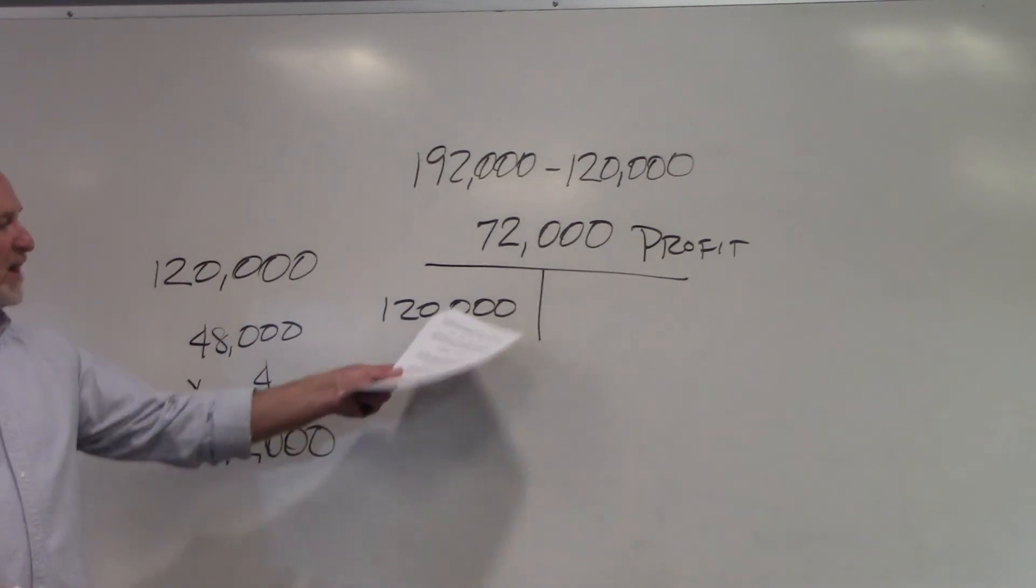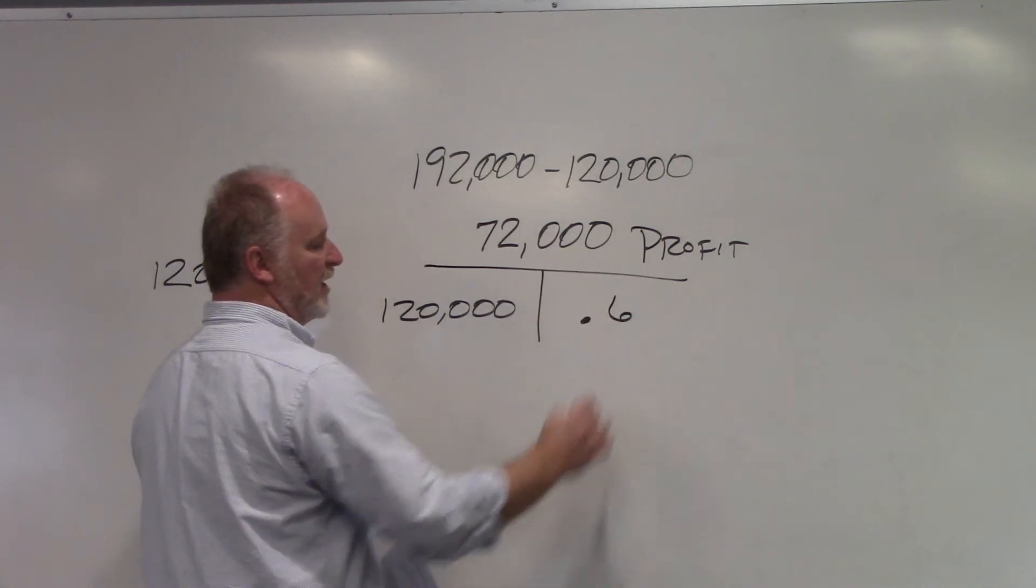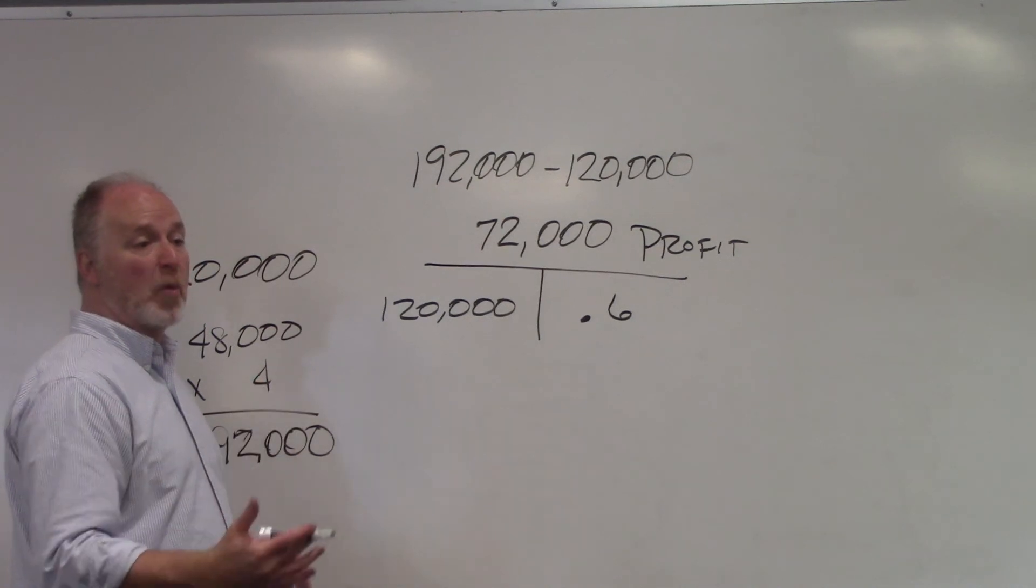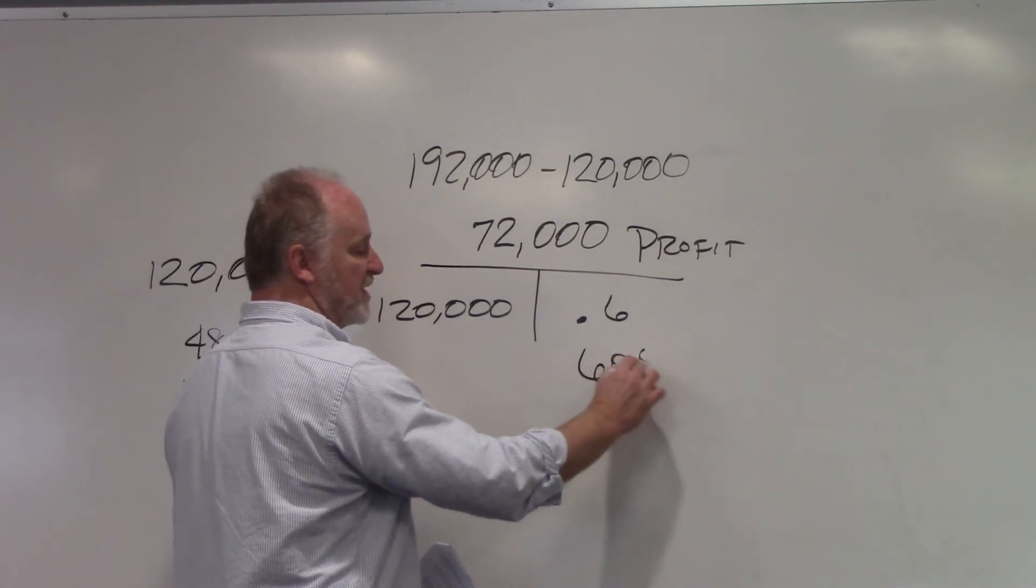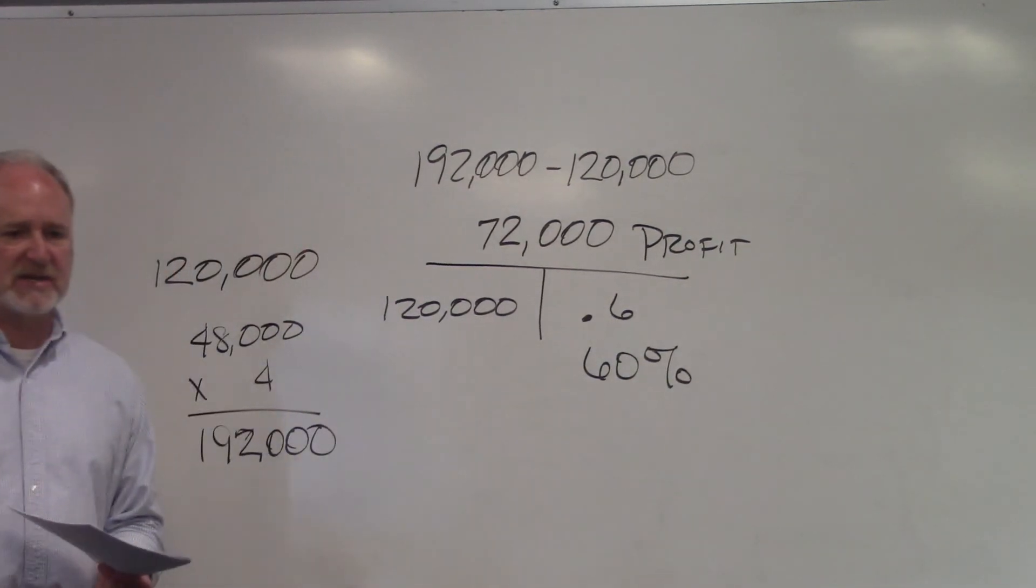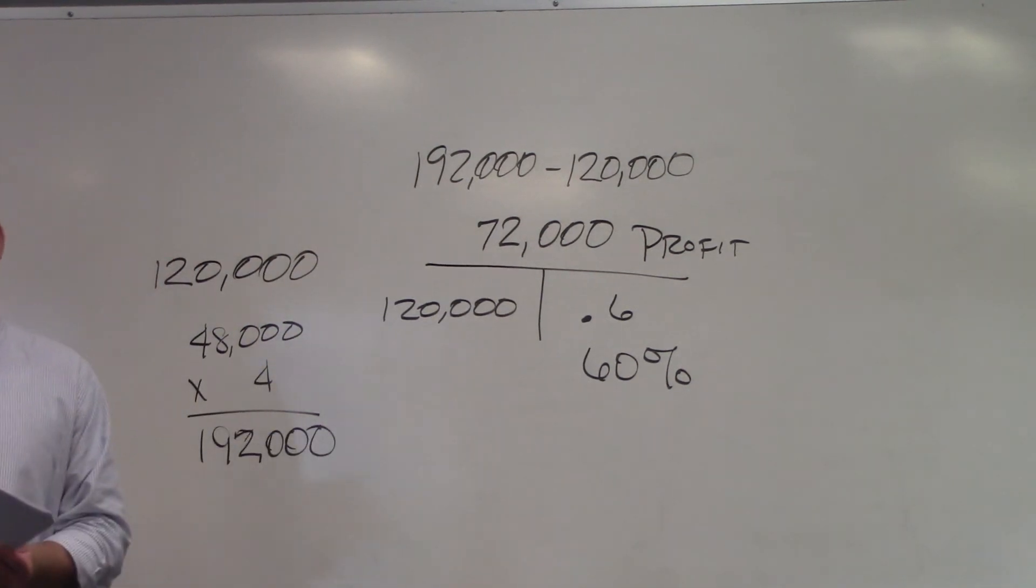There's no doubt in my mind when you punch that into your calculator, it said 0.6, but don't forget to convert the decimal to a percentage by multiplying it by 100. 0.6 times 100 will tell you that his percent of profit was 60%. Percent of profit. Very popular question on the exam.